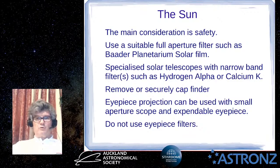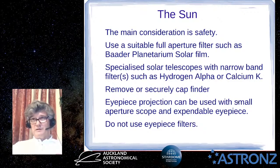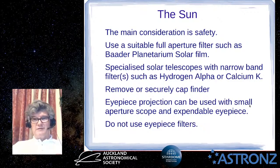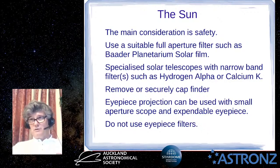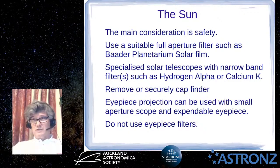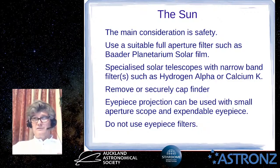Purpose-built solar scopes such as Coronado (from Meade) or Daystar are expensive but give amazing views — prominences, faculae, spicules, and more. Another method with a small telescope is eyepiece projection: no filter, but you use a small aperture scope with an expendable eyepiece and project the image onto a card, then safely look at the image on the card. Whatever you do, never use the cheap solar eyepiece filters that sometimes come with department store telescopes — they can get hot and crack, which is very dangerous.